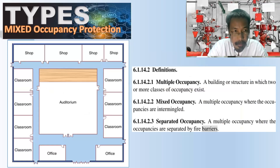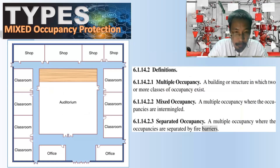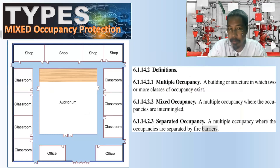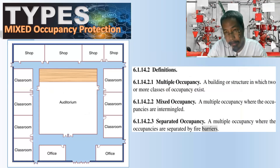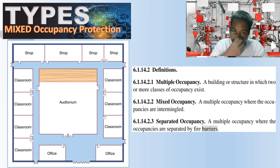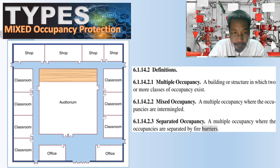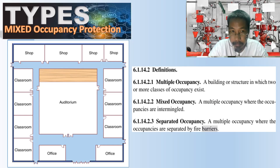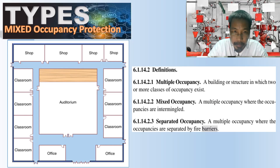Mixed occupancy protection: given the following floor plan, we have office, classroom, auditorium, and shop. Most possibly, these facilities are a school or university. The blue lines again indicate the fire-rated material that protects the area.